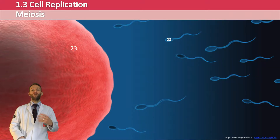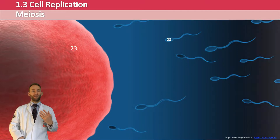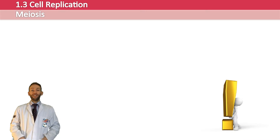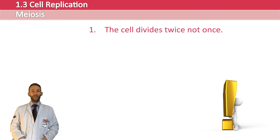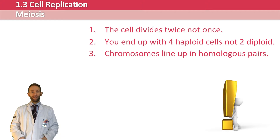What you need is a way of producing cells that have half the number of chromosomes — haploid cells. So in humans, you want to make cells that have 23 chromosomes, which is what we call gametes — sperm and eggs. In order to make these cells you are going to need to carry out meiosis. Meiosis is similar to mitosis in many ways, but there are some crucial differences. The cell divides twice to make four cells and not just once, and you end up with haploid cells and not diploid cells.